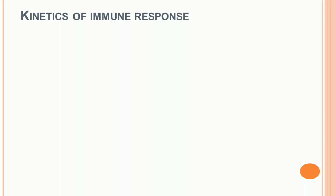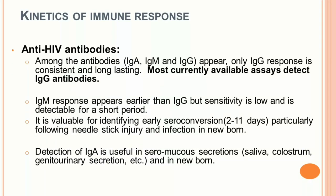Regarding the kinetics of immune response: IgM, IgG, and IgA antibodies are developed, but only IgG is consistent and long-lasting. Most available laboratory diagnostic assays detect IgG antibodies. IgM appears earlier than IgG but has low sensitivity and is detectable for a very short period — valuable for identifying early seroconversion and infection in newborns. Detection of IgA is useful in seromucous secretions and in newborns.